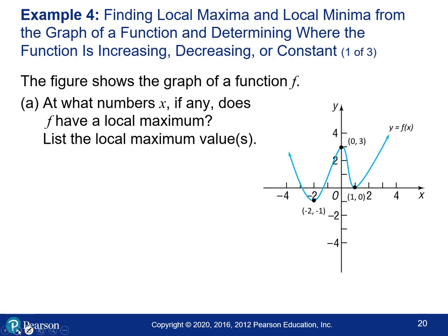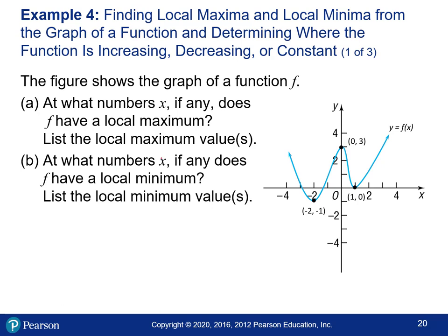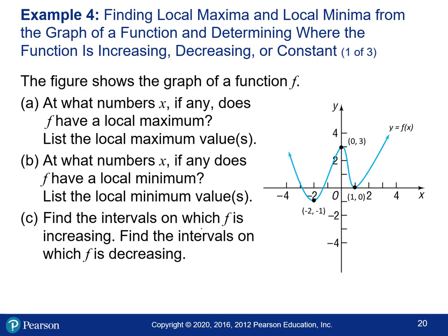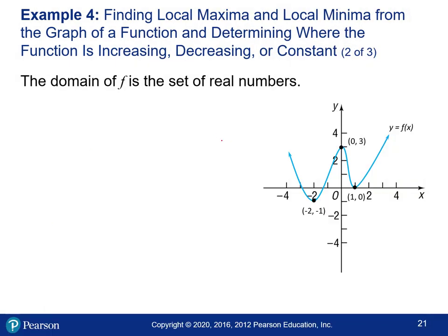Let's work through this example. The graph of function f is shown, and we need to find: the x-values where f has a local max, the local maximum values, the x-values where f has local minimums, and the intervals where the function is increasing and decreasing. The domain for this function is all real numbers because there are arrows on both ends, extending to negative and positive infinity.